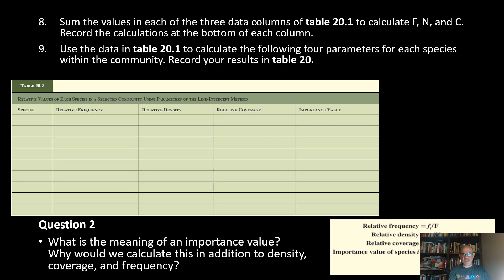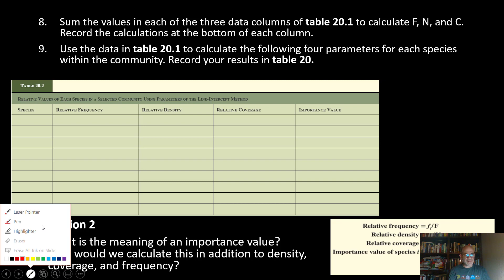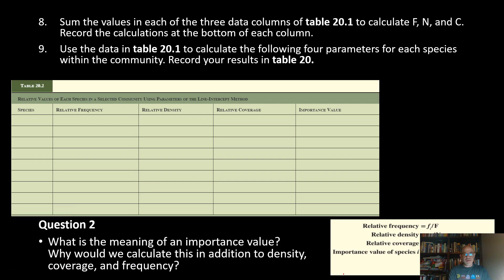So this is the final interpretation: based on those importance values — creosote at 0.8059 and species S (birch sage) at 0.798 — we would label this a creosote–birch sage desert scrub habitat.